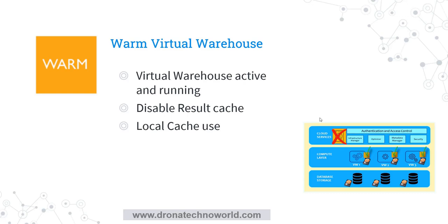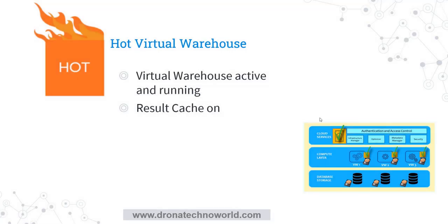Compared to a cold virtual warehouse, the warm virtual warehouse is less expensive, but it is not optimum from a performance aspect. Hence we come to the next state of the virtual warehouse called a hot virtual warehouse. The hot virtual warehouse is a state during which the virtual warehouse is active and running for a while and has also processed some queries. However, in this case the result cache — the cloud services cache — is enabled, and if you execute the query it will use the result cache and the result will be returned to the calling system.